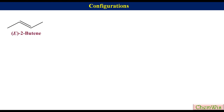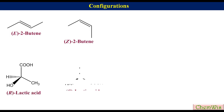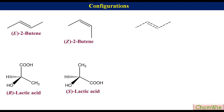For example, E-2-butene and Z-2-butene, and R-lactic acid and S-lactic acid. If we want to convert E-2-butene to Z-2-butene, we will have to break the pi bond, rotate the C-C bond through 180 degrees, and then remake the pi bond.